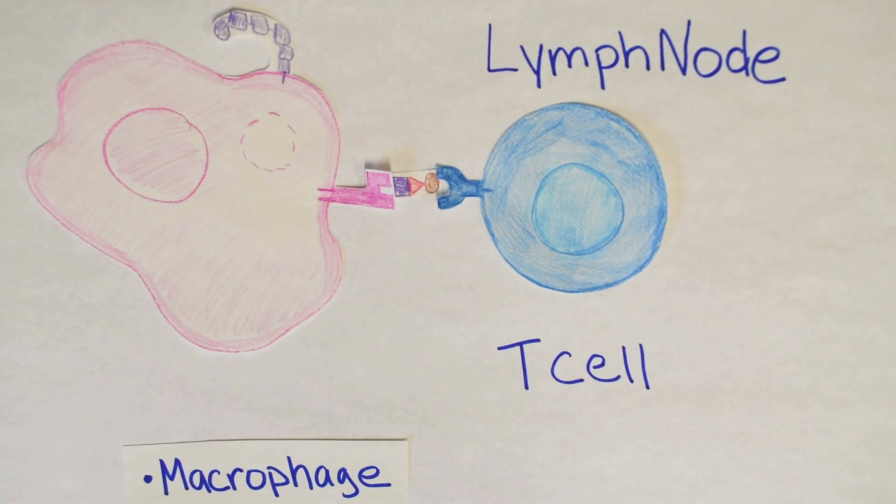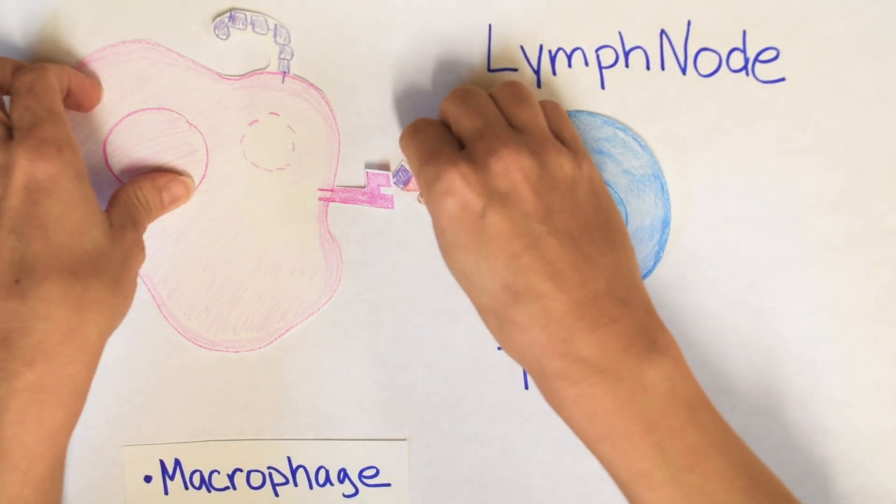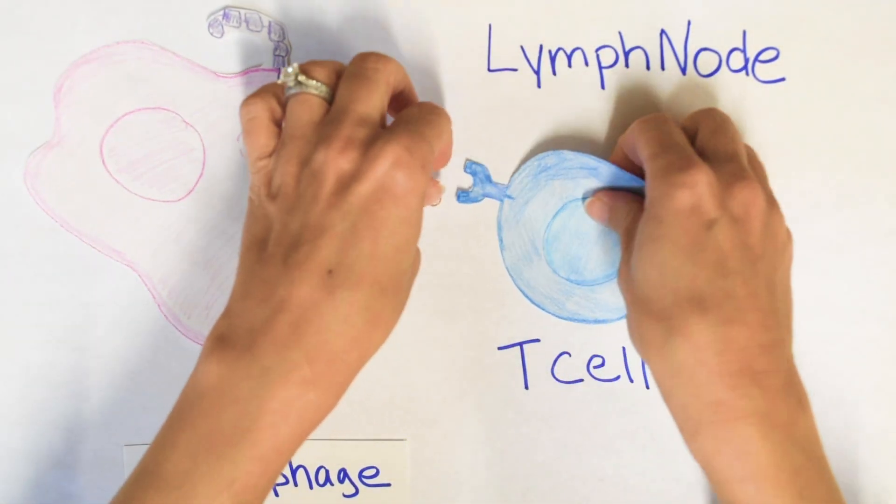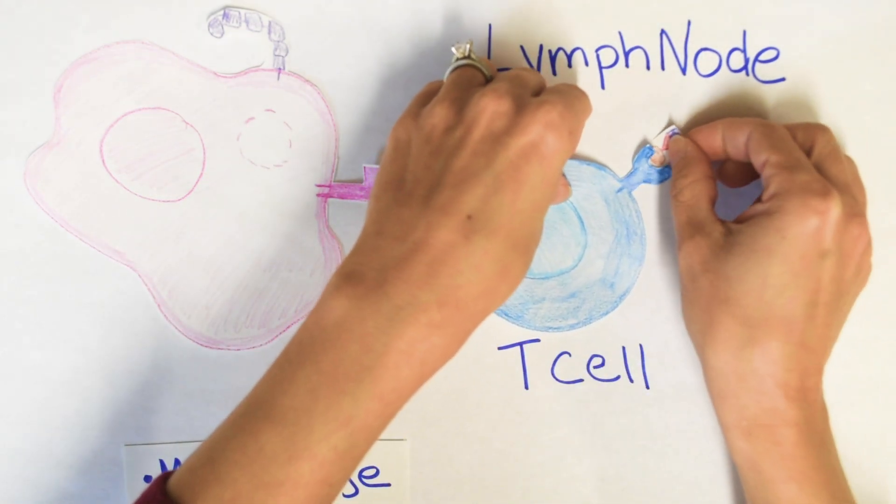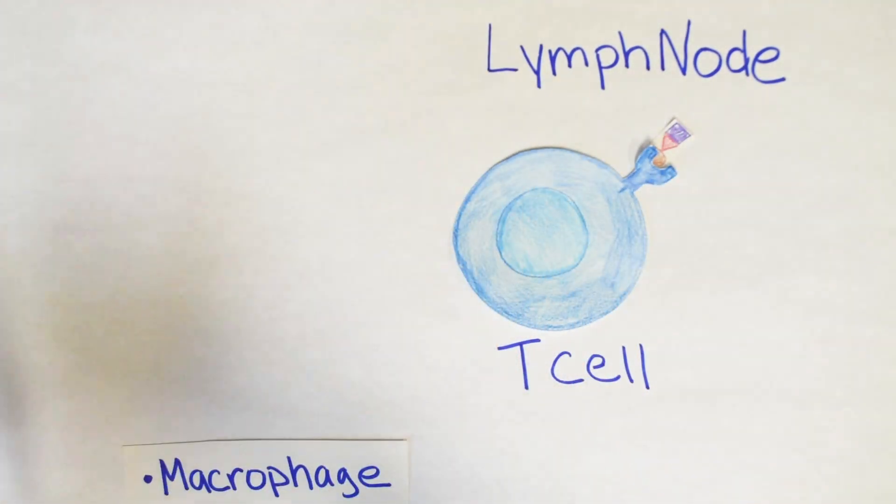Macrophages run around looking for a matching T cell. This could take days, but here, boom, you got it. They matched. Now this T cell has been activated specifically for Campylobacter jejuni.